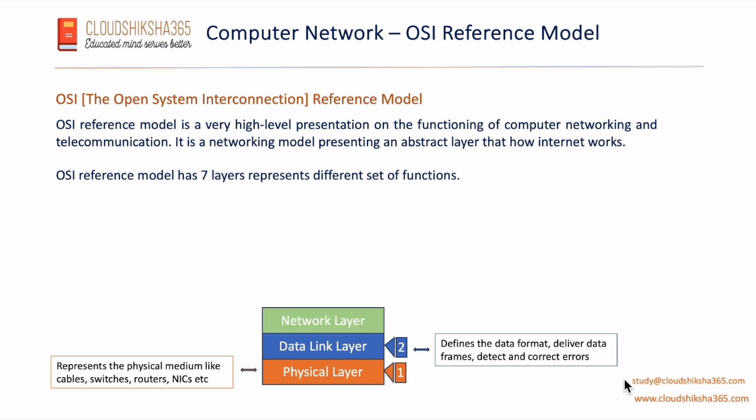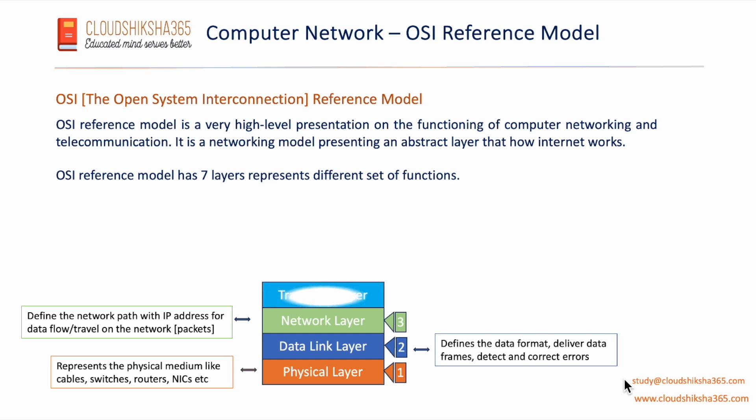The third layer is the network layer, also called layer 3. It defines the network path based on IP address, determining where data packets have to travel. The network layer takes care of routing and logical addressing. As mentioned in a previous chapter, the IP address with port number is defined here at the network layer.